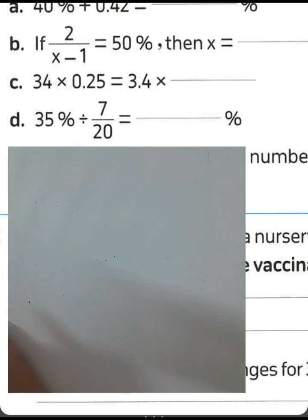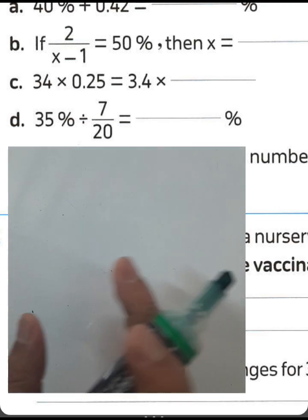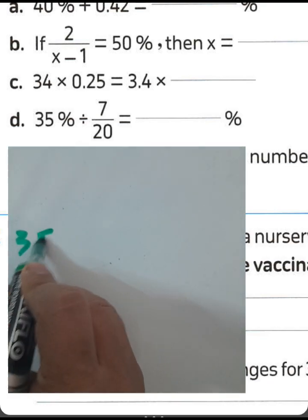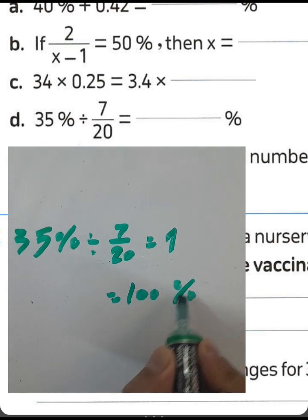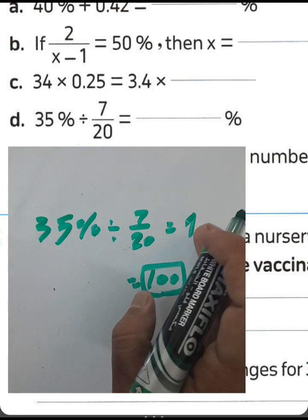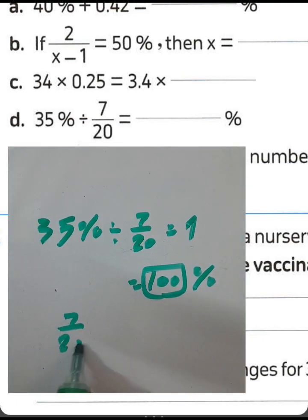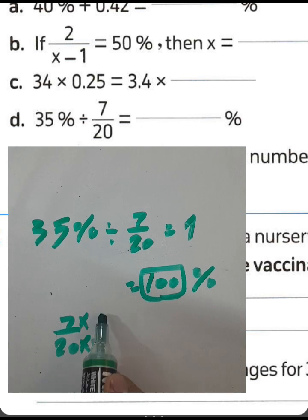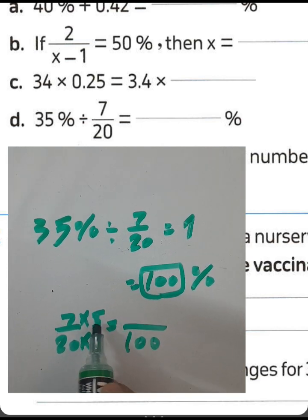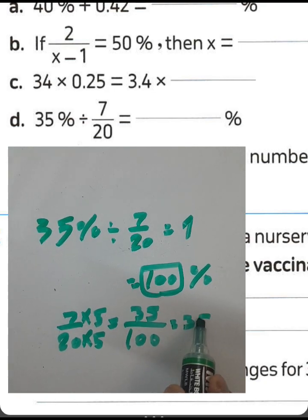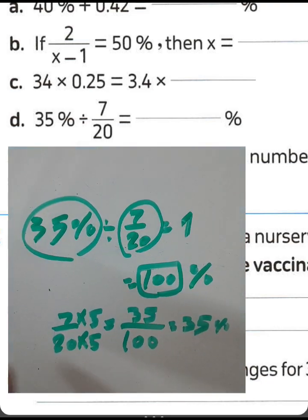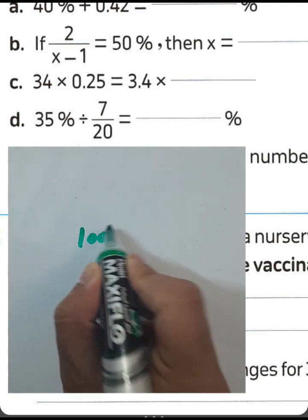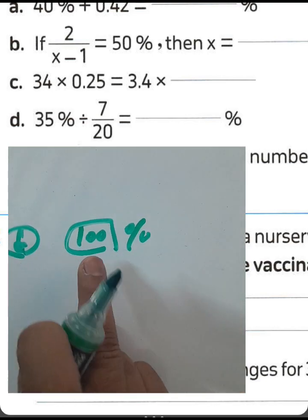Letter D: 35% divided by 7/20. Convert 7/20 to percent by multiplying by 5: 7 times 5 equals 35, and 20 times 5 equals 100, giving 35%. So 35% divided by 35% equals 1, which equals 100%. Put 100 in the space — do not put 1.